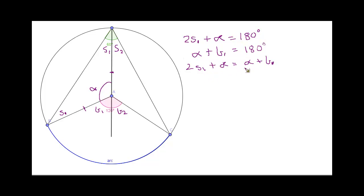So, we can now write 2S1 plus alpha equals alpha plus B1. Now, if you look at both sides of this equation, you can see that both sides have alpha. So, what we'll do is, we'll take away alpha from both sides. And then we'll get the equation 2S1 equals B1. And we'll just draw a nice big square around it.